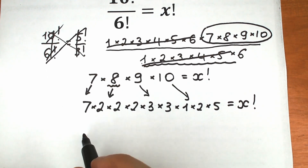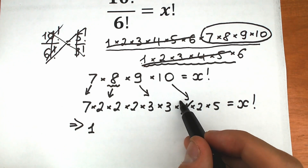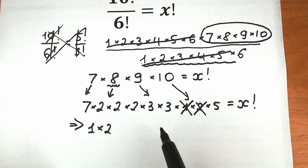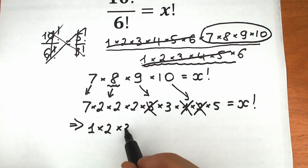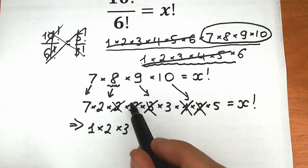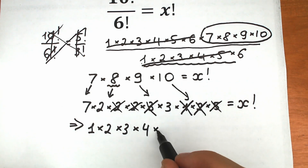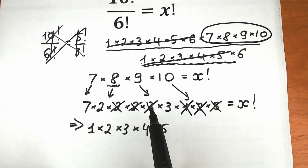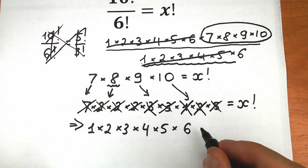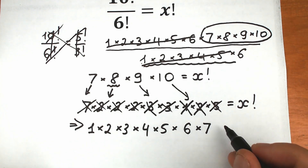Now let's create an order from 1 up to the highest number we have. We have 1, so write 1 and cancel it. Next we need 2 — take one of the 2s from 8. Then 3 — cancel a 3 from 9. Then 4 is 2 times 2 — cancel the remaining two 2s from 8. Then 5 — cancel the 5 from 10. Then 6 is 2 times 3 — take the 2 from 10 and the remaining 3 from 9. Then times 7. After using all remaining factors, we've exhausted everything, so we have the product from 1 to 7, which equals x factorial.